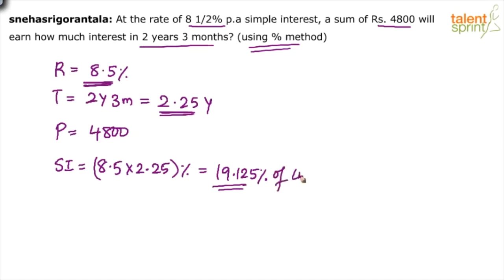Of what? Of the principal amount. It is always calculated on principal amount. So, 19.125 percentage of 4,800. Now, don't try to cancel out the zeros with percentage and make your life complex. Do it in a smart way.